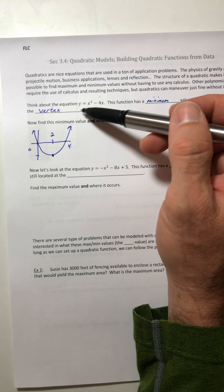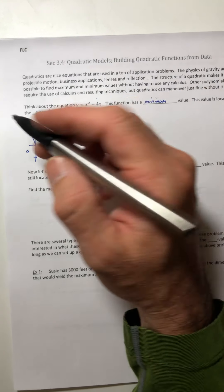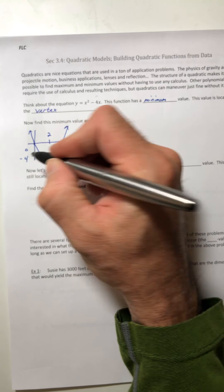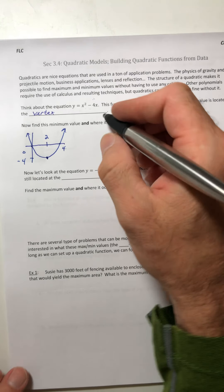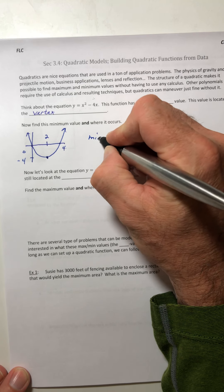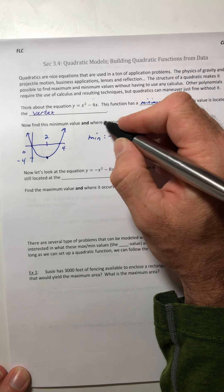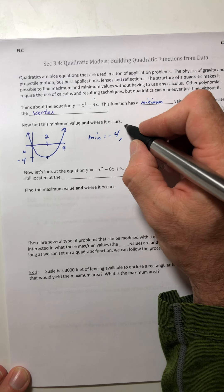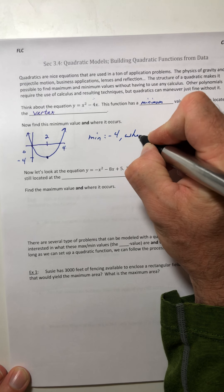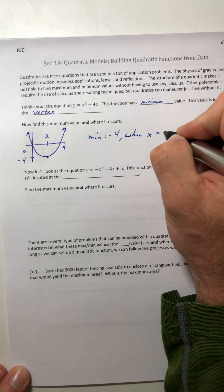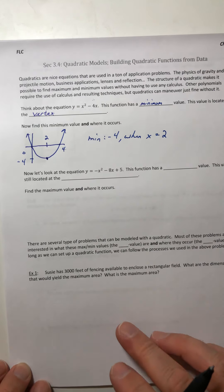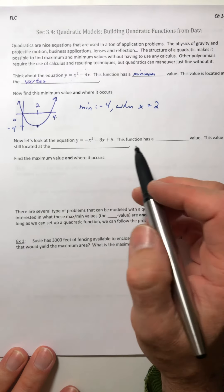So the minimum value, we can figure out what it is, and we can also figure out where it occurs. So the vertex, the nice thing about parabolas is that the vertex is right in between the two x-intercepts. So what number is between 0 and 4? 2. So when x is 2, if I plug that into the function, I would get negative 4 as a result. So the minimum is negative 4, and where it occurs or its location is when x equals 2.